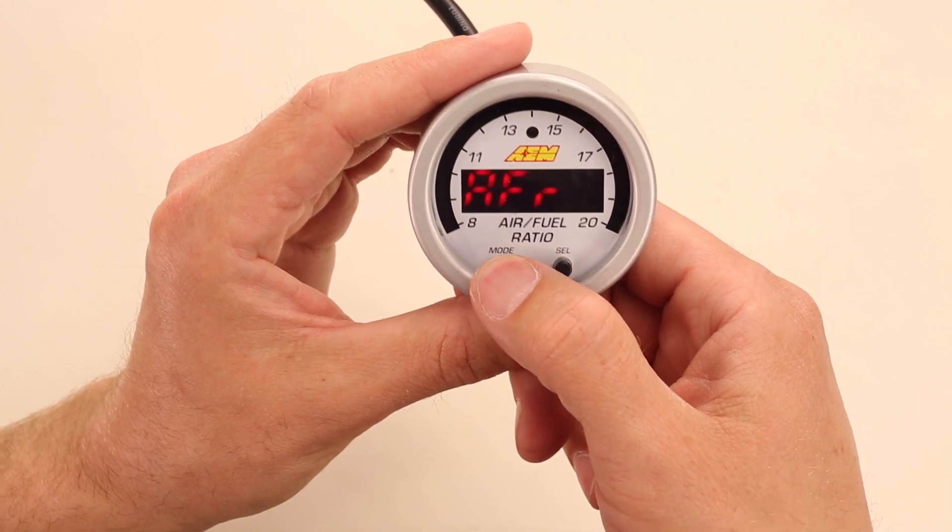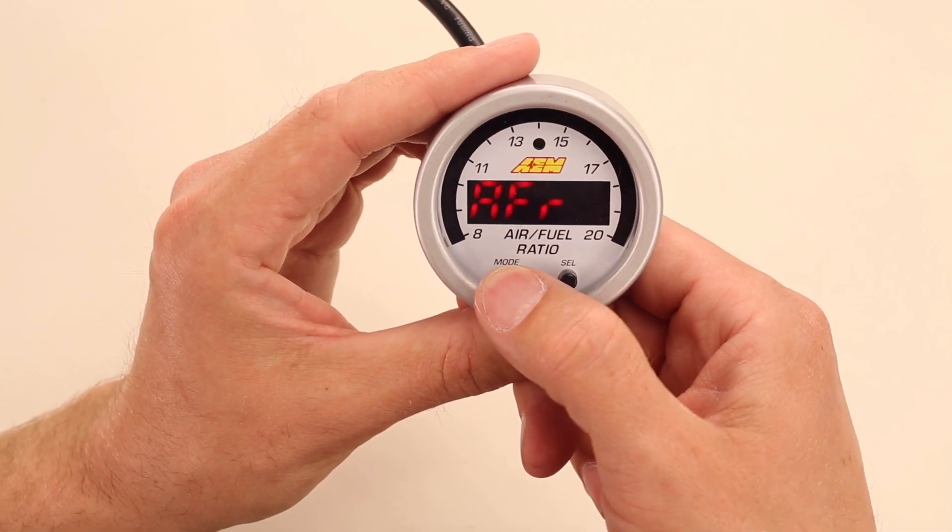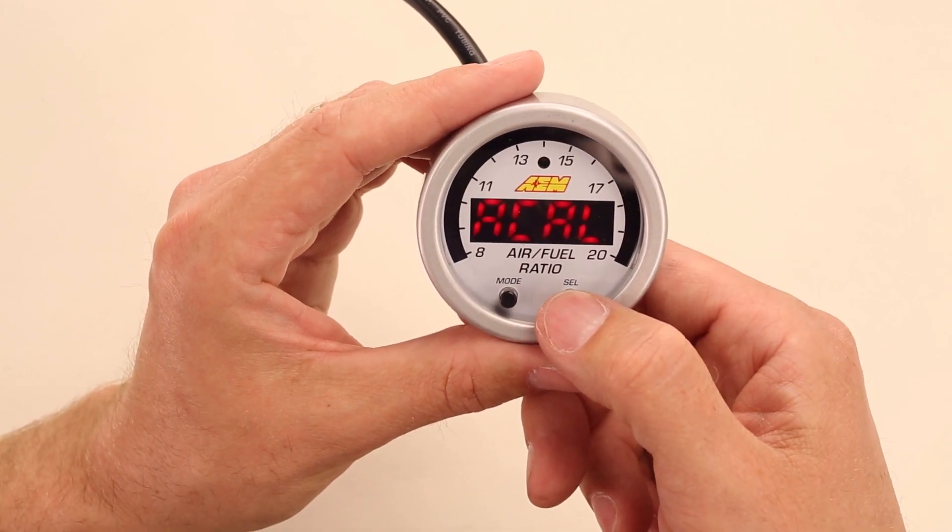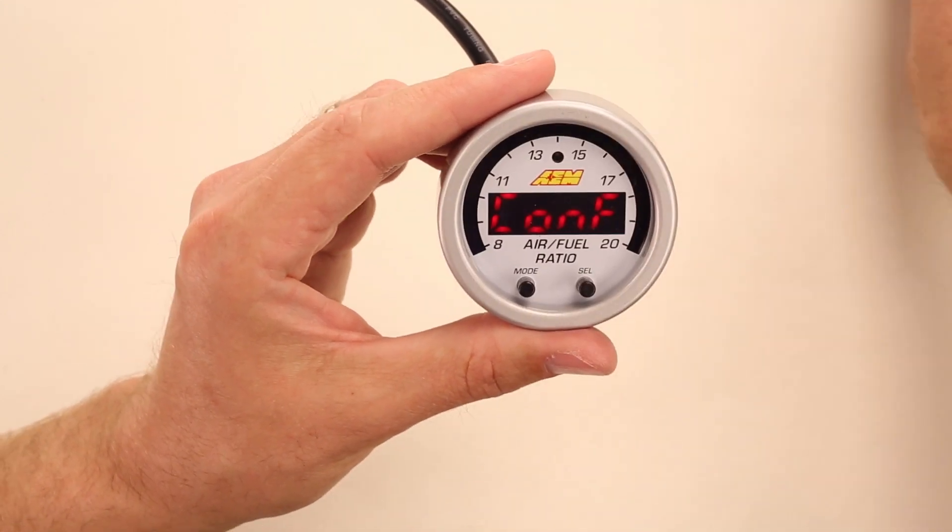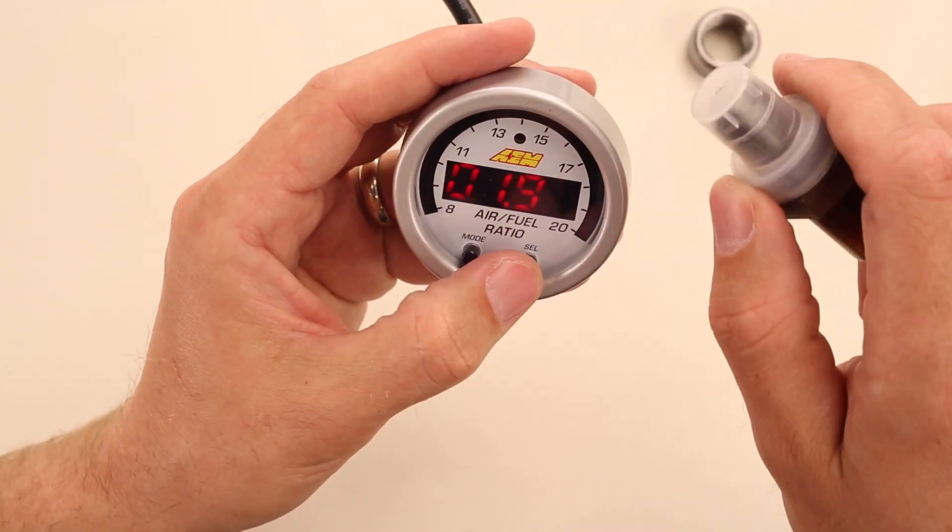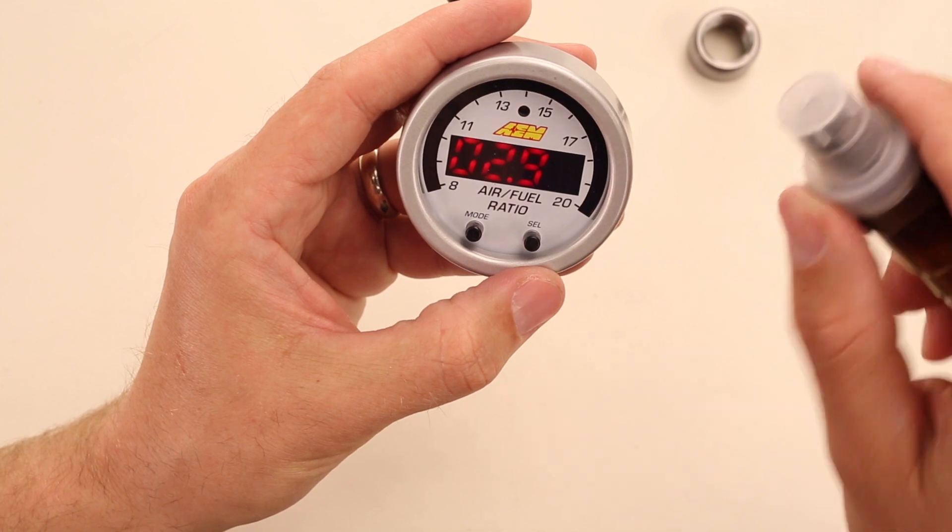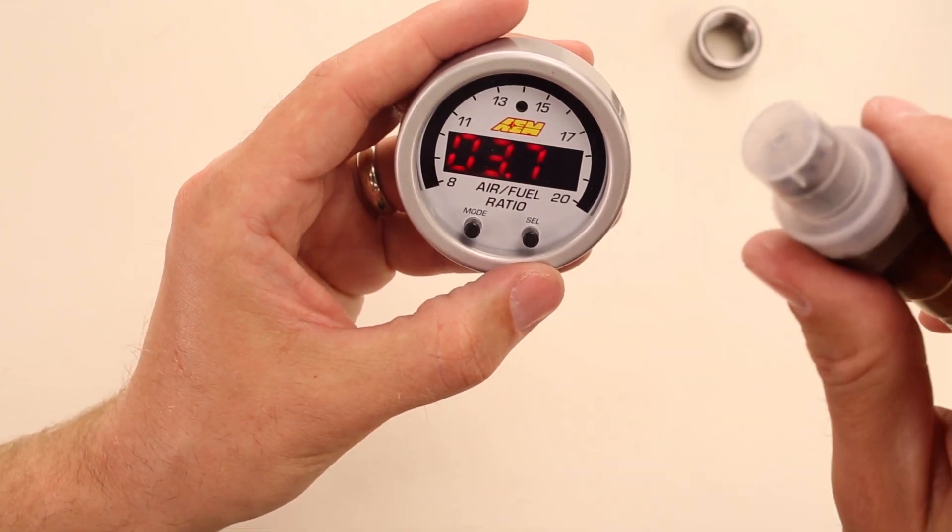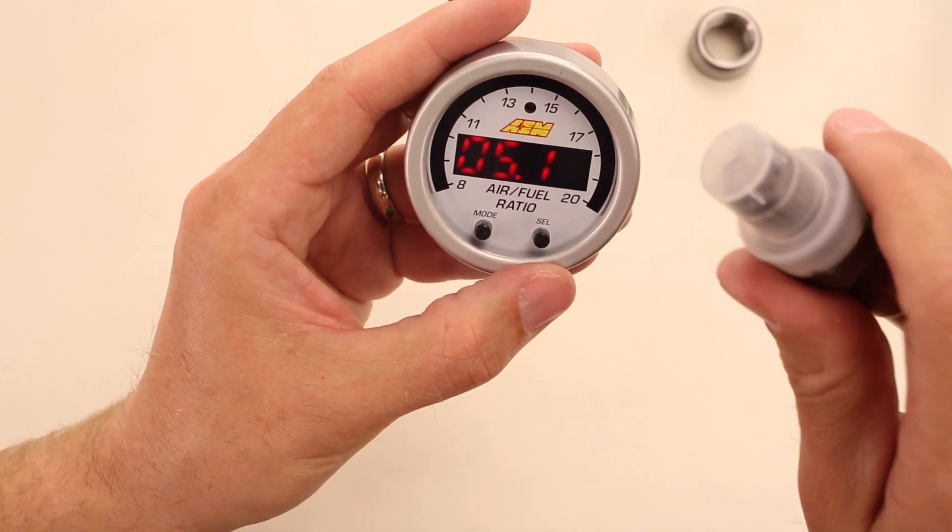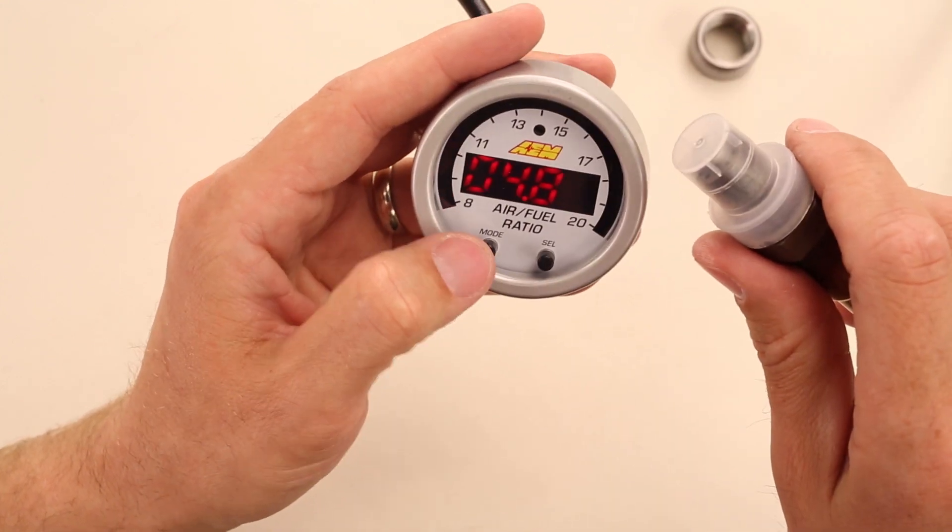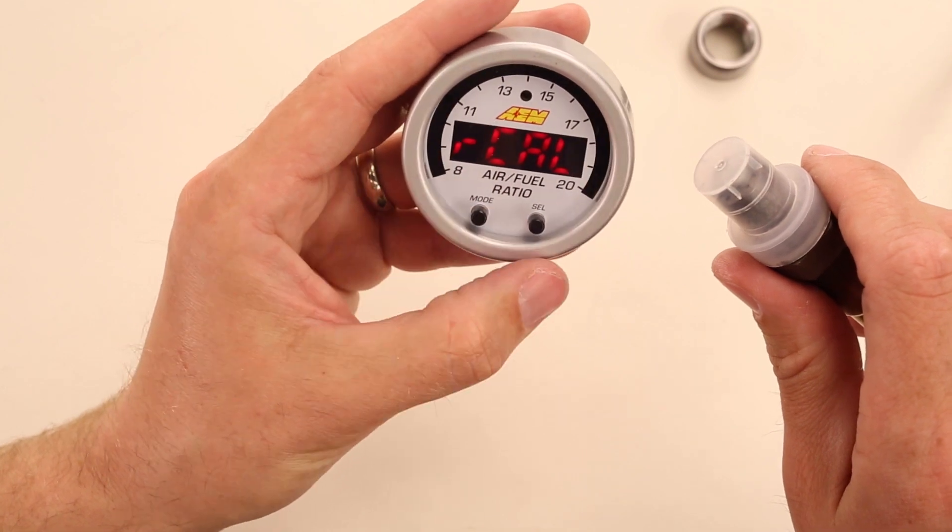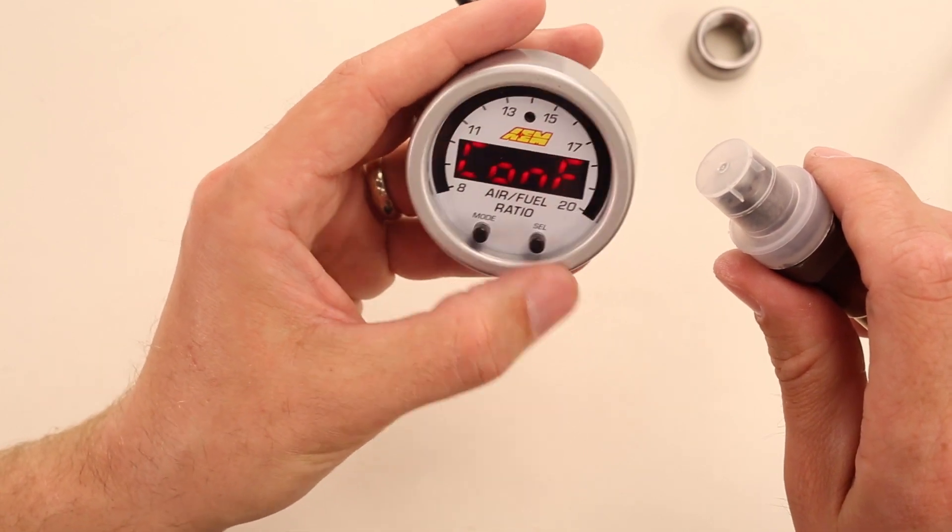Now to show you how advanced this technology is, AEM also gives you the ability to do an air calibration of the sensor. You take the sensor and calibrate it to your standard day. Take it out of the exhaust and it will calibrate it there on the track, on the dyno, wherever you need the most precision. There's also a base factory calibration that you can select and confirm. And this will return it to the factory AEM specs.